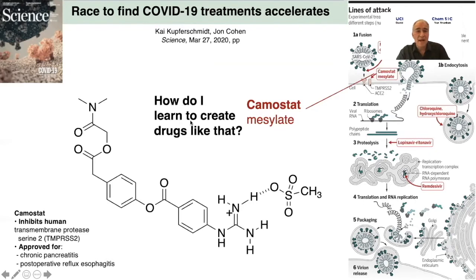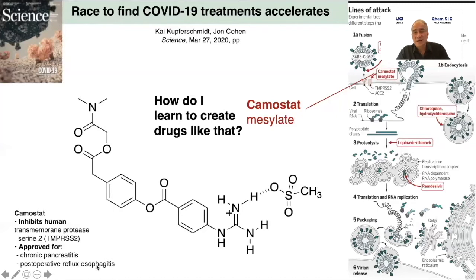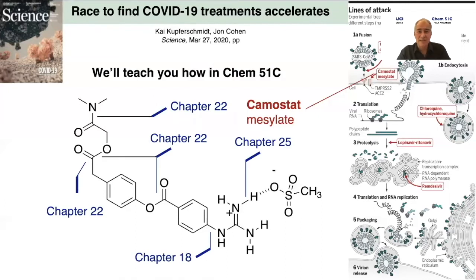If you ever wanted to learn how to create and design and build drugs like that, that's what this class is about. I picked the first molecule on here, camostat mesilate. This is the chemical structure of camostat mesilate. It's actually an old drug from the 1980s. It inhibits human transmembrane protease serine 2, and it's been approved for chronic pancreatitis and postoperative reflux esophagitis. Not for coronavirus infection, but once a drug is approved and shown to be safe by the FDA, MDs can prescribe it for any other disease they want. When I look at this molecule, these are exactly the kinds of molecules that we teach you how to build in Chemistry 51C.